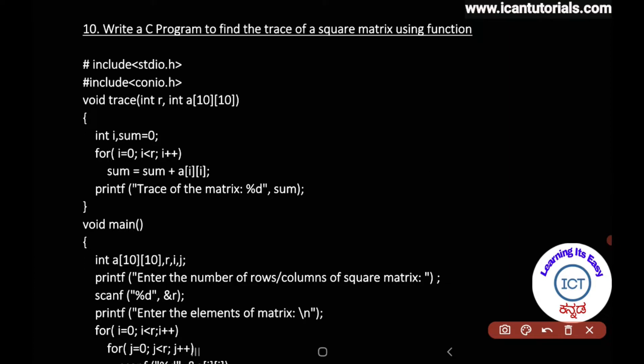If you are interested in the program, write a C program to find the trace of a square matrix using a function. There are 5 simple steps to solve the program. Read the program properly: write a C program to find the trace of a square matrix — find the trace. That is our program.